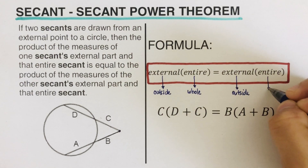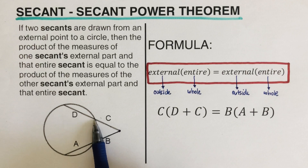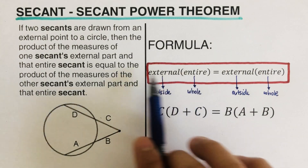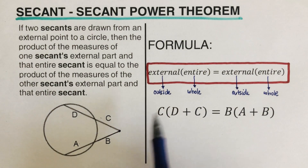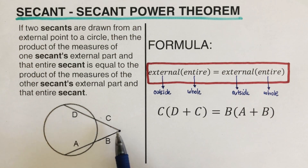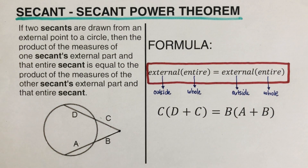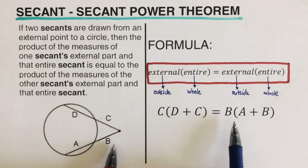In this example we have a first secant and another secant. C is the external segment of the secant — located on the outside. So we take the measure of C and multiply it by the entire secant, which is C plus D. We do the same thing on the other secant: the outside is B, times the whole thing. Outside times the whole thing equals outside times the whole thing. This is the secant-secant power theorem.